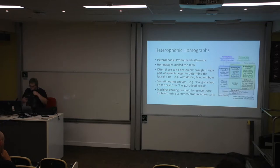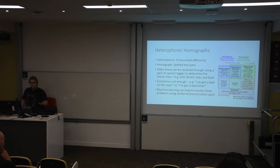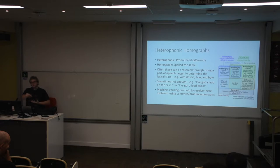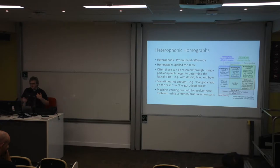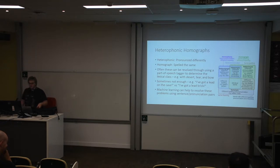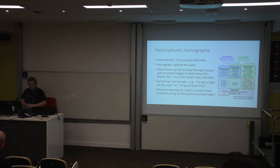Heterophonic homographs can often be resolved with a part-of-speech tagger — you run it on a sentence, it identifies whether a word is a noun, verb, or adjective, and you can disambiguate: 'bowing' the verb versus 'bow' the noun. But part-of-speech taggers aren't always enough — 'I've got a lead on the case' versus 'I've got a lead brick': both use 'lead' as a noun, so you need more context. This is another area where machine learning is really useful for distinguishing these very similar cases that traditional techniques weren't good at.